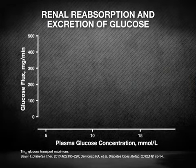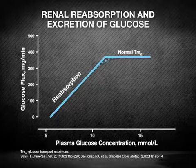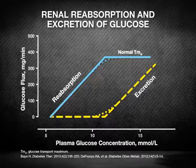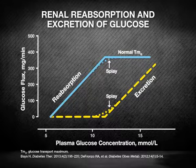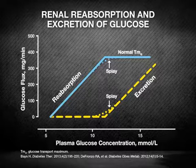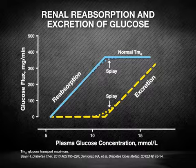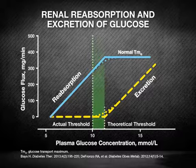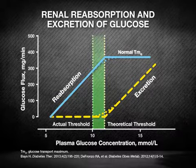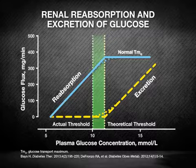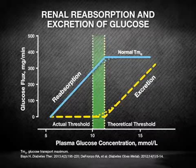In healthy individuals, the rate of renal glucose reabsorption increases linearly with increasing plasma glucose levels, until the maximum reabsorptive capacity of the proximal tubule is met, after which glucose passes into the collecting ducts, resulting in glycosuria. Also referred to as the tubular maximum for glucose, the maximal reabsorptive capacity varies somewhat from nephron to nephron, but overall corresponds to a threshold plasma glucose concentration somewhere between 180 and 200 milligrams per deciliter, beyond which the transporter system is saturated and excess glucose spills into the urine.